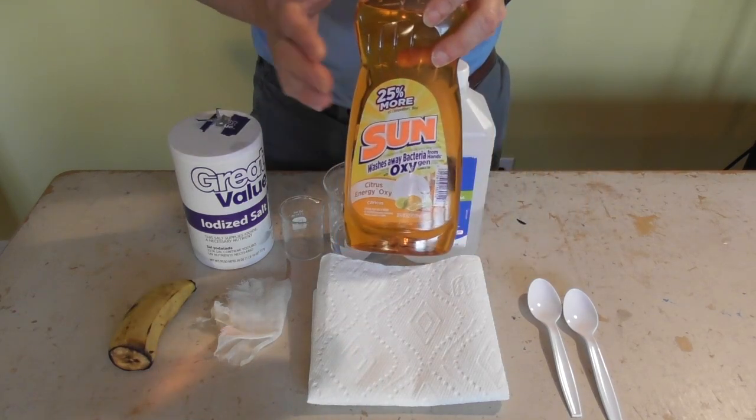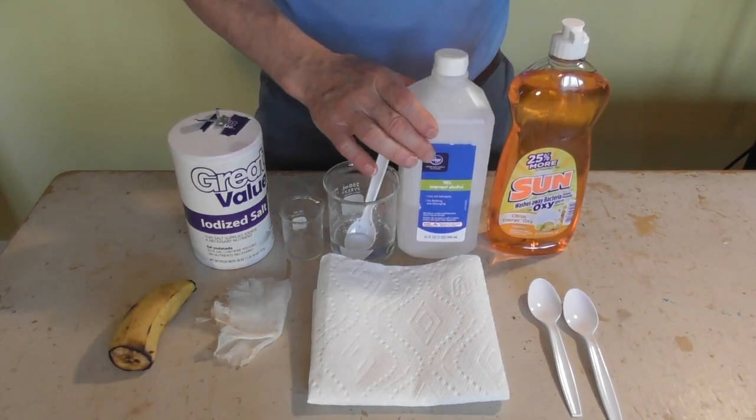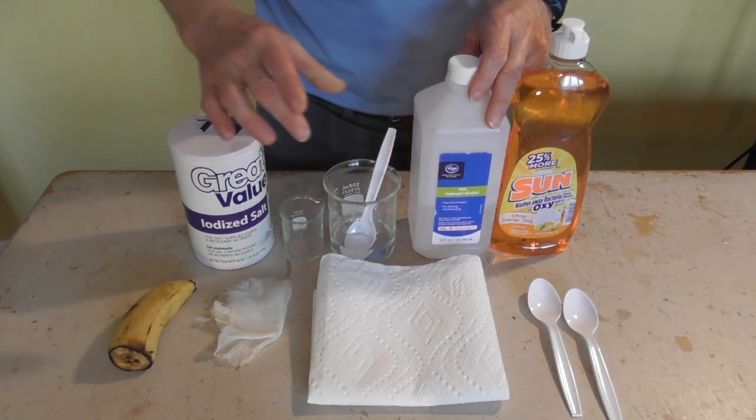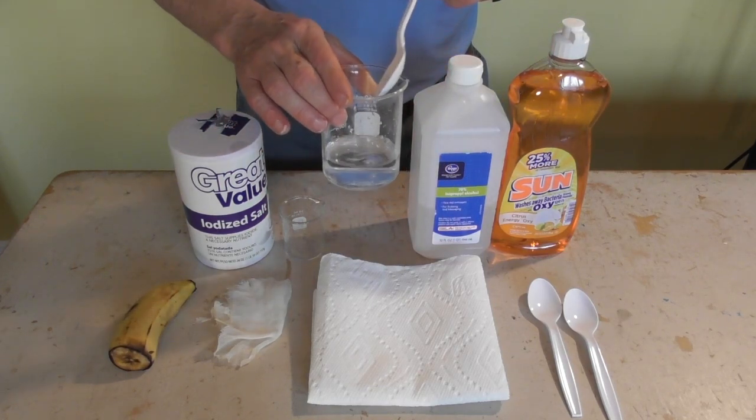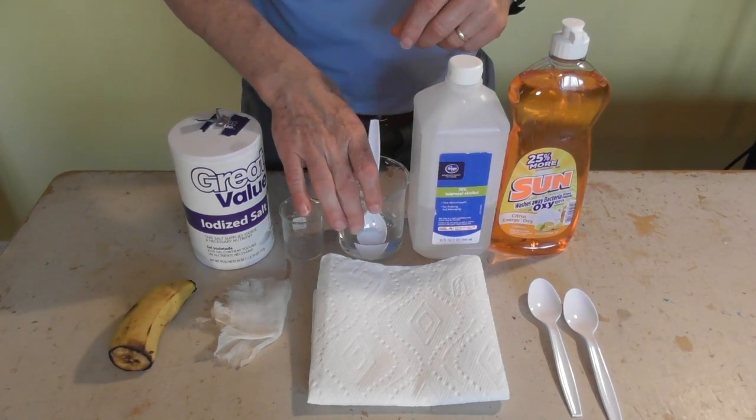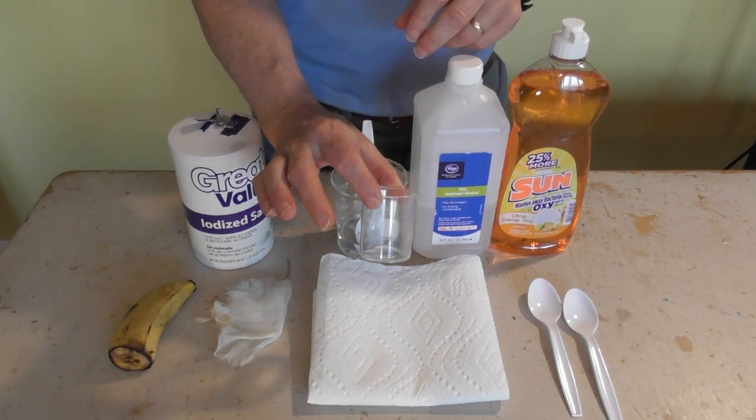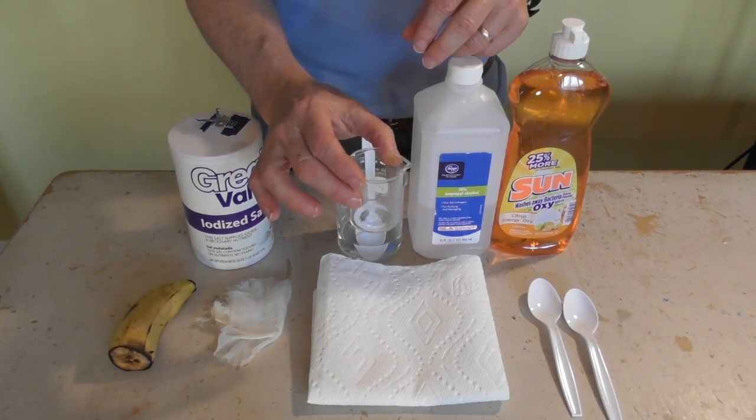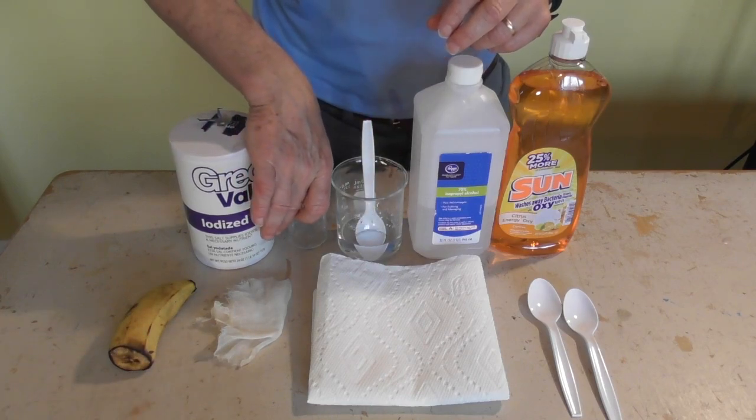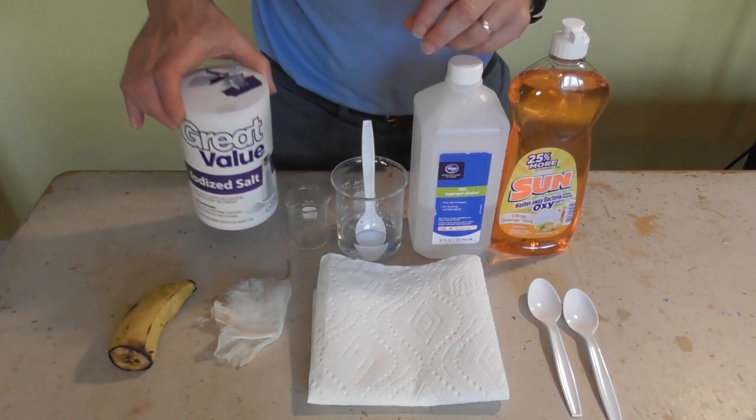First we have some liquid soap, really any brand will work. Some rubbing alcohol, a container of water, and you don't need a beaker, you can use anything to hold water. A smaller container, this is actually perfect, but a baby food jar will work if you don't have a beaker. Some table salt,